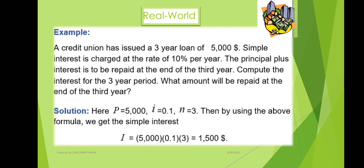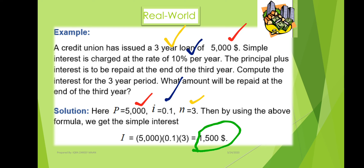Here is a real-world example: a credit union has issued a three-year loan. The principal amount is five thousand dollars and the rate is ten percent. So P equals $5,000, n equals 3, and i equals 0.1. Using the formula, we get interest equal to the product of these three terms, which gives us fifteen hundred dollars as the interest amount on the five thousand dollars.